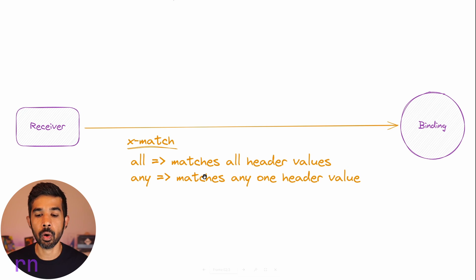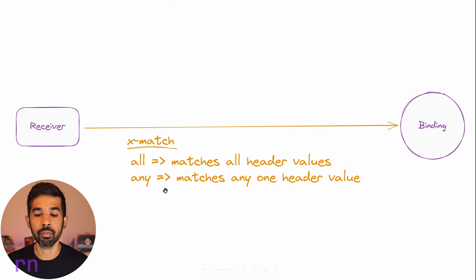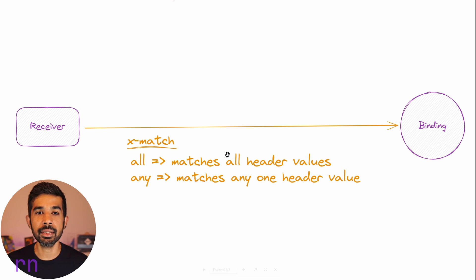The x-match header can have two different values: 'all' and 'any'. If it's 'all', it ensures that all the header values specified on the binding are matched. If it's 'any', it only needs to match any one of the header values. Along with the x-match header value, you can specify the other headers that need to match on the message for it to be selected for that particular queue.